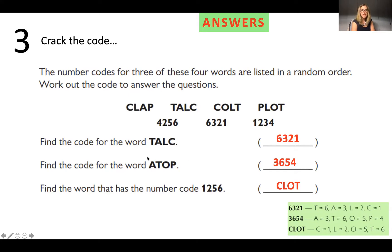Same again for the word atop. And the answer is three, six, five, four. And finally, working the other way, we've got the number code one, two, five, six. We've got the word plot.